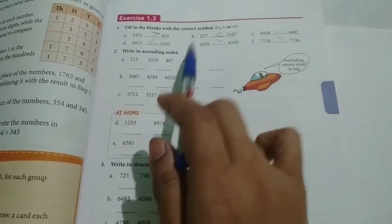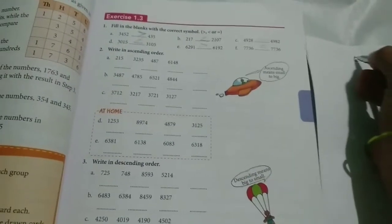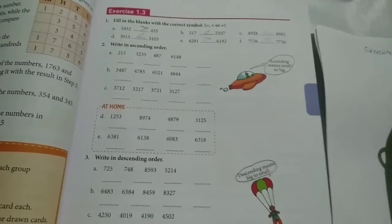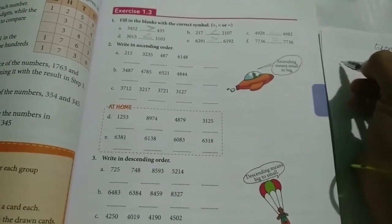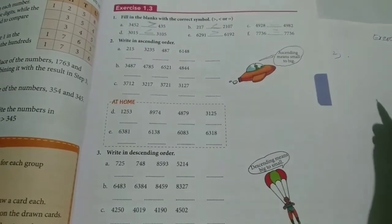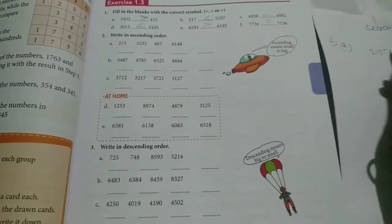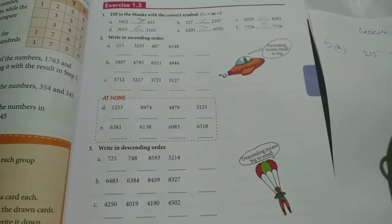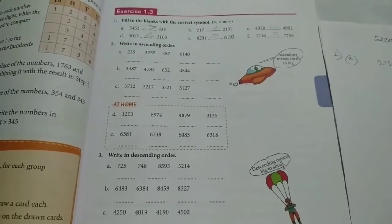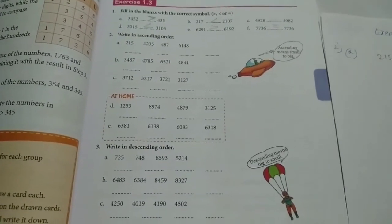What is second main? Write in ascending order. Exercise 1.3, second main, write in ascending order. First one: 2, 1, 5, 3, 2, 3, 5, 4, 8, 7, 6, 1, 4, 8. So for these numbers, how to write in ascending order?